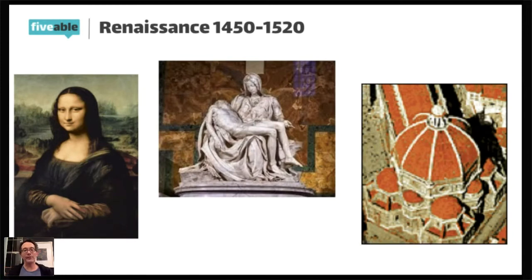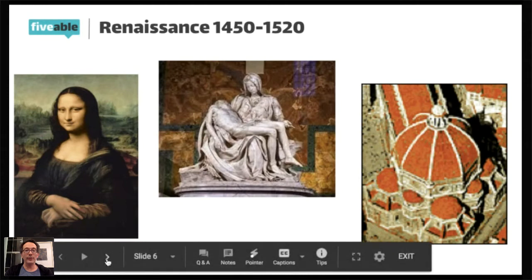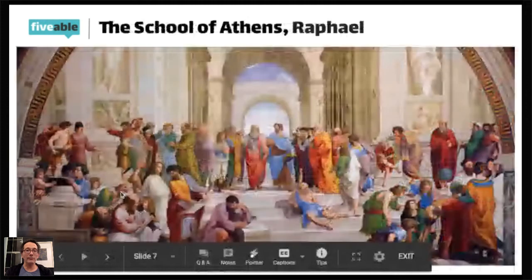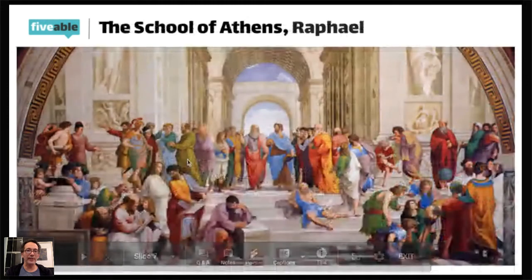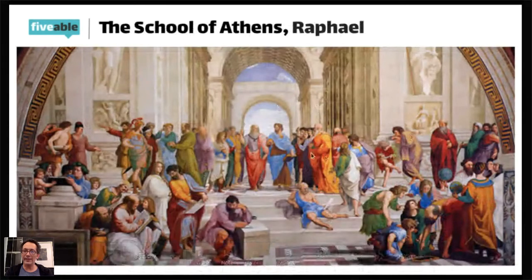The Renaissance is a rebirth — going back to the classics of Rome and Greek sculpture, architecture, and writings. It's all about perfection. One of the most famous paintings, The School of Athens by Raphael, depicts the classic themes of Renaissance painting. What are the most famous key elements of the Renaissance?